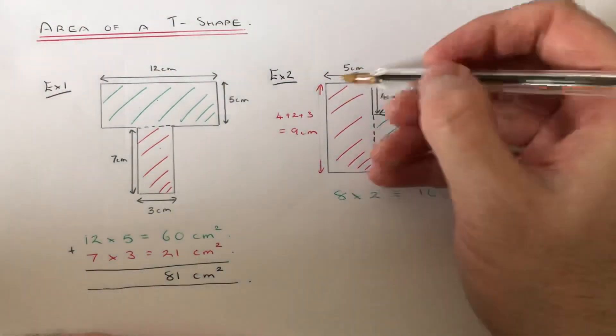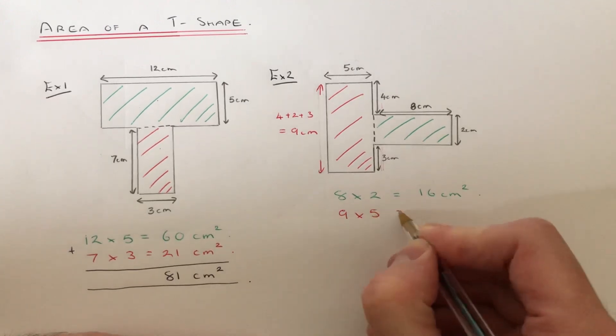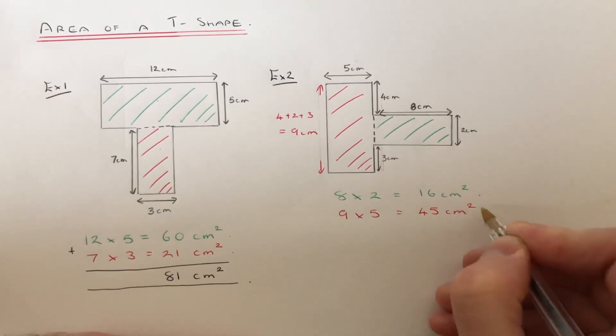So again if we just work out the area now by multiplying the 9 by the 5. So 9 times 5 is 45cm squared.